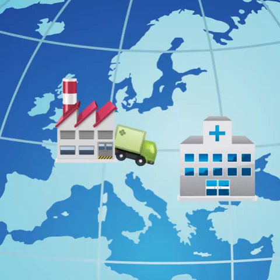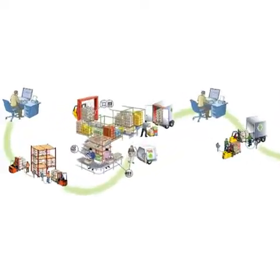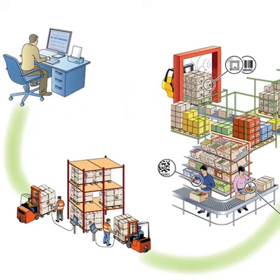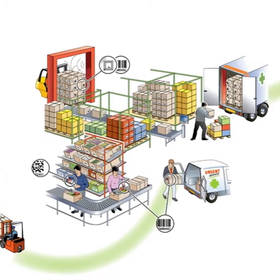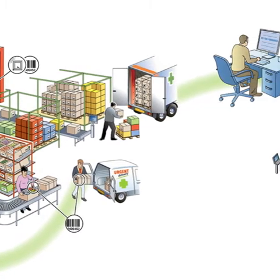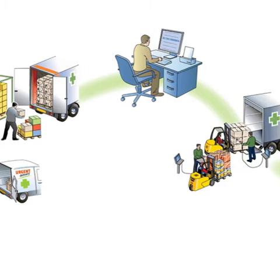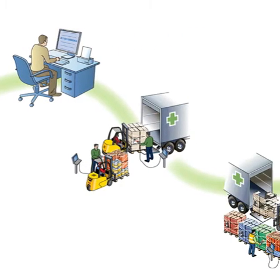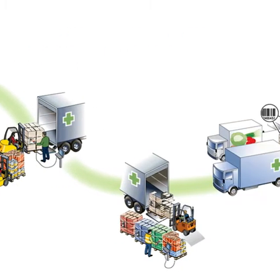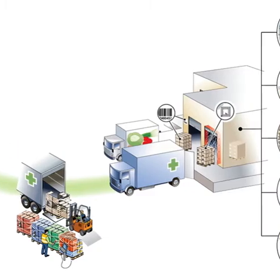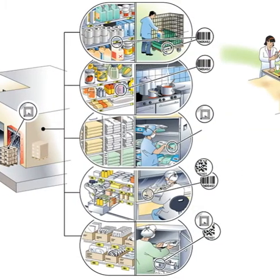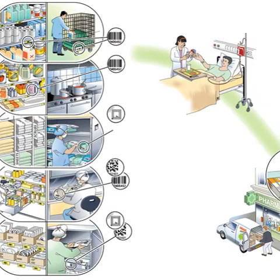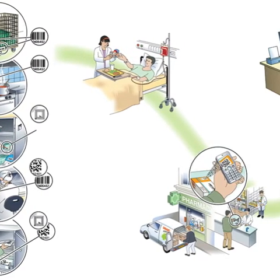The carrier needs to know where to deliver which packages. In case of healthcare products, it's also crucial that they are correctly identified, often to batch, expiry date, or even serial number level. This information can be sent in any way, for example by email, but it's best to exchange it as standard EDI messages directly between computer applications of the actors involved. Using EDI allows automation, increase of speed, and elimination of errors.